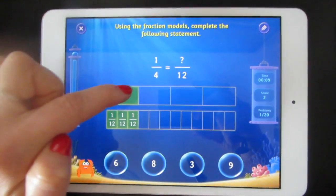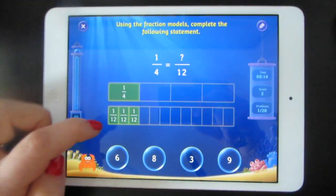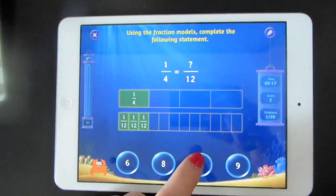One fourth is equal to how many twelfths? I can see that one fourth takes up the same amount of space as 1, 2, 3 twelfths.